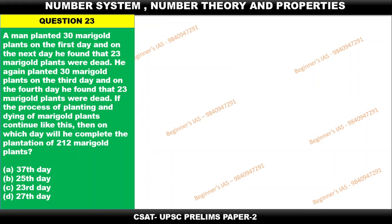Hello aspirants, welcome you all. Let us discuss question number 23. A man planted 30 marigold plants on the first day. On the next day, he found that 23 marigolds were dead. Again, he planted 30 marigolds on the third day, and on the fourth day he found that 23 marigolds died. If the process of planting and dying of marigold plants continues like this, then on which day will he complete the plantation of 212 marigold plants?